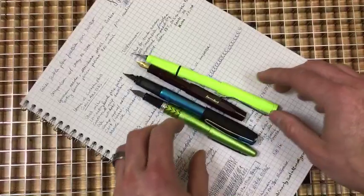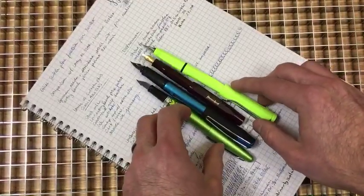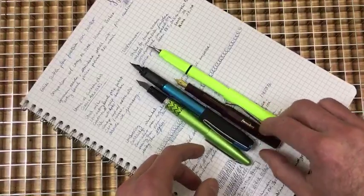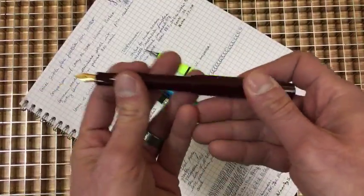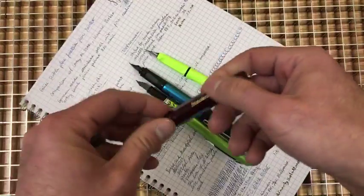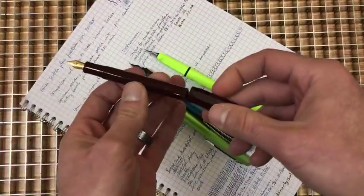The size of each of these here, we have the Safari comes in at being the longest with the cap posted. The Kaweco, being that it is a pocket-sized pen, is very compact when closed, but then extends out to being a normal-sized fountain pen.